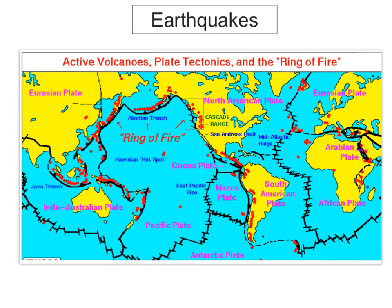The first thing we're going to look at is this area here, called the Pacific Ring of Fire. It's called the Pacific Ring of Fire because it's around the Pacific Ocean, and along here you have the most amount of earthquakes, volcanoes, and tectonic activity. 90% of all tectonic activity takes place around the Pacific Ring of Fire, because you have quite a lot of destructive plate boundaries.